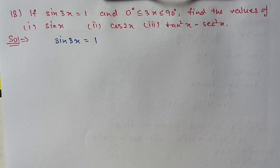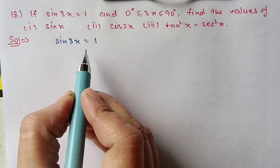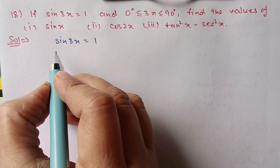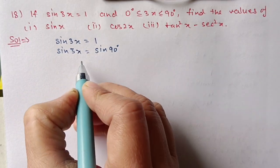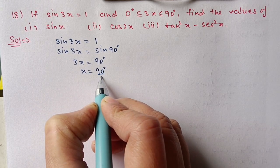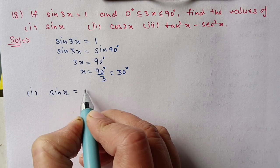Question 18, first part: If sin 3x equals 1 and 3x is between 0 and 90 degrees, find the values of sin x, cos 2x, and tan squared x minus sec squared x. Starting from sin 3x equals 1: the value 1 corresponds to sin 90, so in place of 1 we write sin 90. This means 3x equals 90 degrees, and x equals 90 by 3, which is 30 degrees.